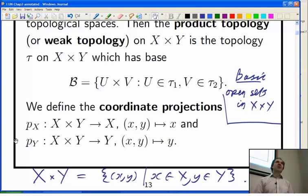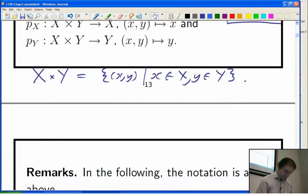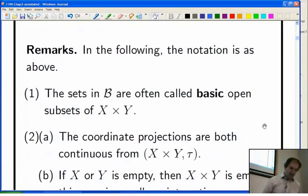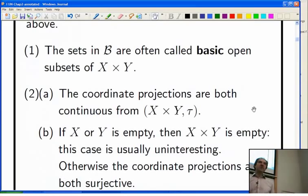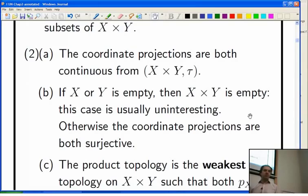But assuming X and Y are non-empty, then these coordinate projections are surjective. You can get to everything in either of the sets using these coordinate projections. And of course, if you work in R², these would be the usual projections onto the axes. Using the same notation as above, these sets are the basic open sets. It's standard that if you put the usual product topology on, then the coordinate projections are continuous. And as long as you're dealing with non-empty sets X and Y, then the coordinate projections will be surjective.